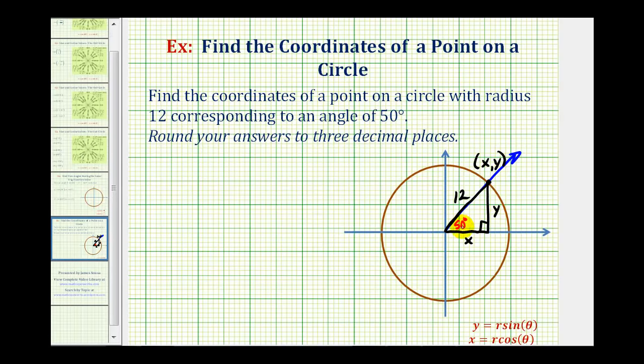So using the reference triangle, we know cosine 50 degrees must equal x divided by 12. Remember the cosine function value is equal to the ratio of the adjacent side to the hypotenuse. And we also know that sine 50 degrees must equal y divided by 12, or the ratio of the opposite side to the hypotenuse.